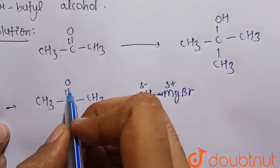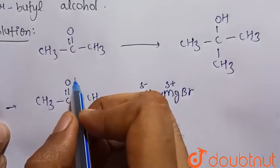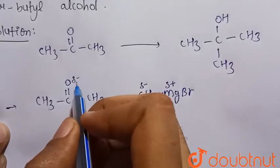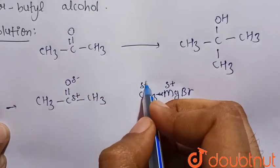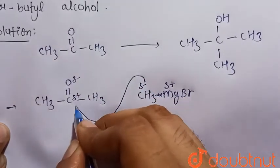It becomes delta minus and the carbon becomes delta positive. This carbon is nucleophilic in nature and this carbon is electron deficient.